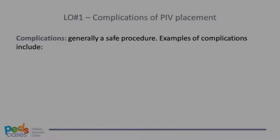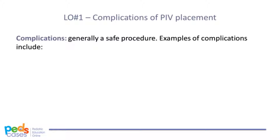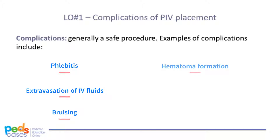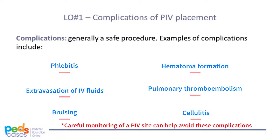Finally, what are the potential complications of peripheral IV placement? Placement of a peripheral IV is generally a safe procedure with little risk. Complications include phlebitis, extravasation of IV fluids, bruising, hematoma formation, pulmonary thromboembolism, and cellulitis. While generally safe, there is always potential for more severe complications. For example, extravasation of certain medications can be severe and cause significant tissue damage requiring debridement or surgical intervention. Fortunately, these are rare, and careful monitoring of a PIV site can help avoid these complications.